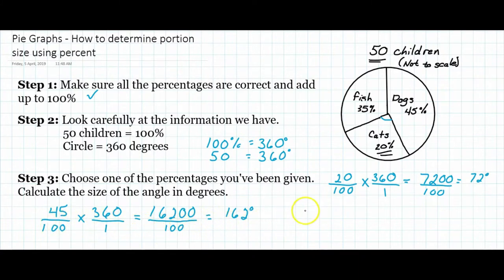Now to work out fish, we don't really need to do any of this. If you understand this, then all we need to do is take this 162 degrees and add it to the 72 degrees.